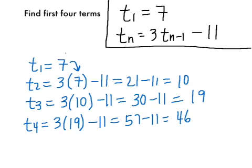So again, we were asked for the first four terms. t₁ is 7, t₂ is 10, t₃ is 19, and t₄ is 46.